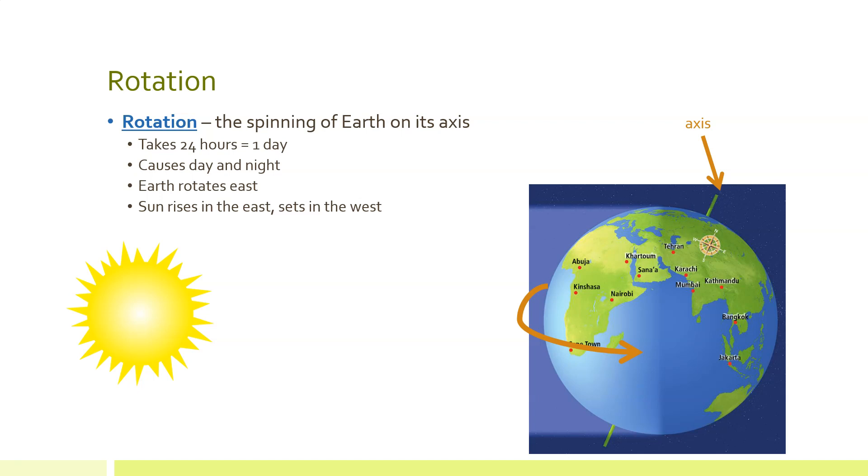The reason that rotation causes day and night is because when the sun is shining, the sunlight can only reach the half of the Earth that is facing it. This line through the middle of Earth separates the day from the night. This side of Earth that is facing the sun is having daytime. The other side is dark, which means it is nighttime.